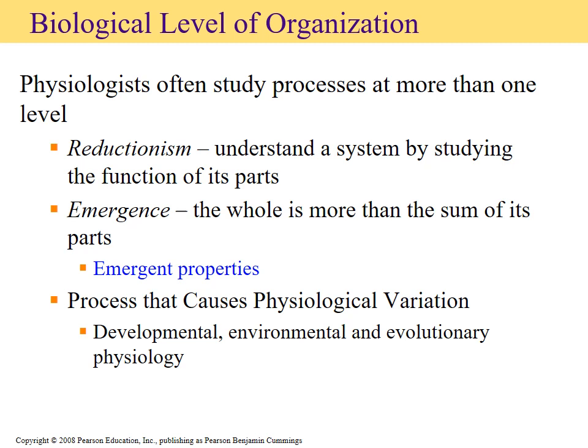An emergent property basically says that if you put all the little pieces together, you get something larger, more complex, and more beneficial to the overall organism. Anytime you do something like cooking or baking, you're demonstrating emergent properties — taking individual ingredients and combining them to make something more beneficial, more nutritious, and definitely more delicious than the individual pieces.